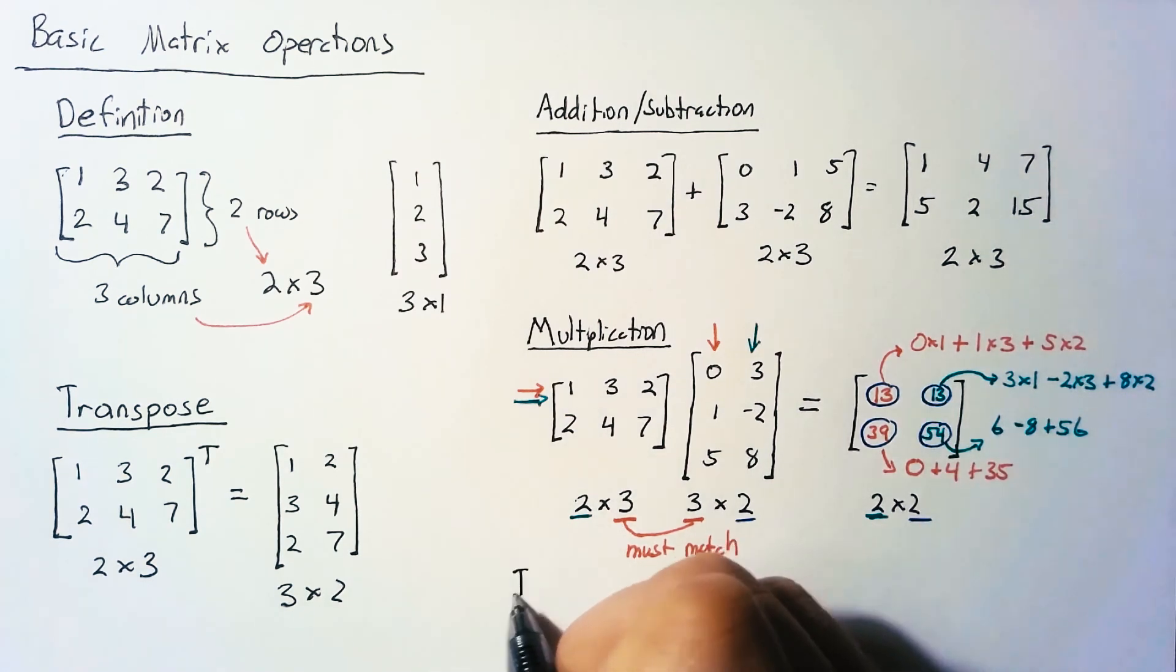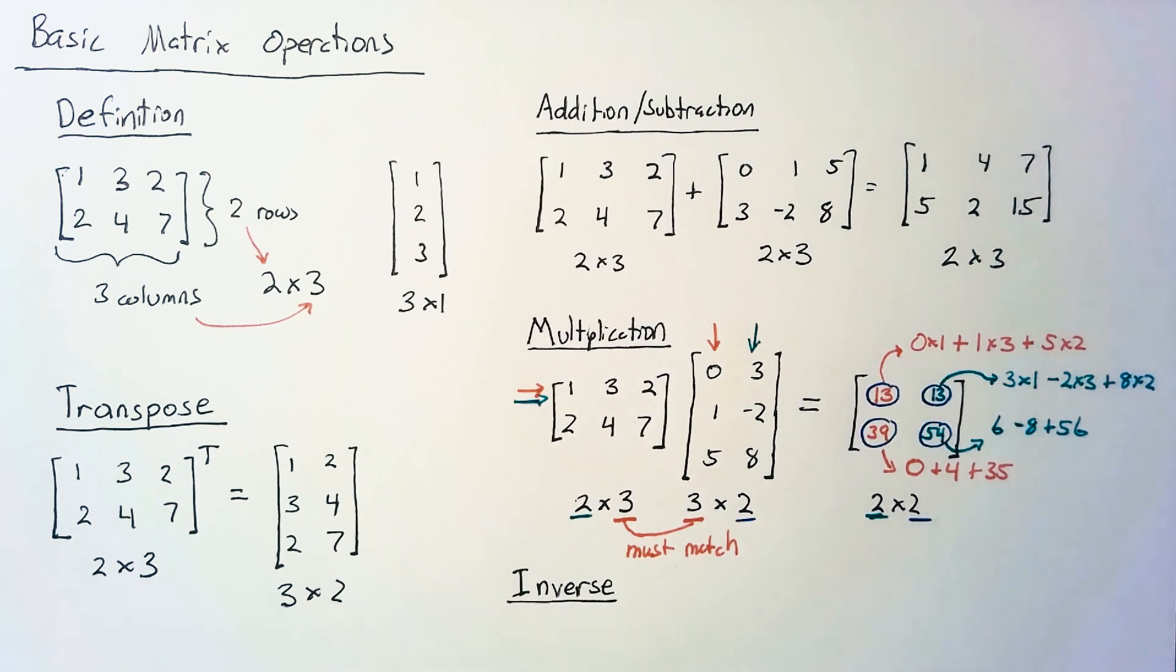The final operation is the inverse of a matrix. There are operations we can perform for 2×2 and 3×3 matrices, but it's probably easier to use substitution by hand. Really, you'll use a computational tool such as Python or MATLAB to invert the matrix.